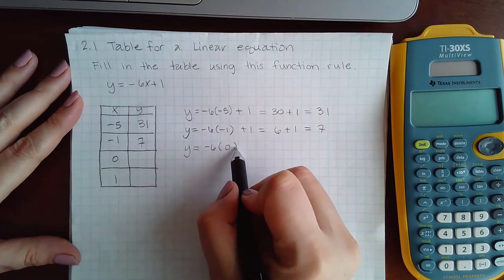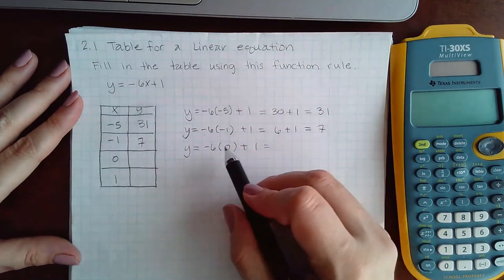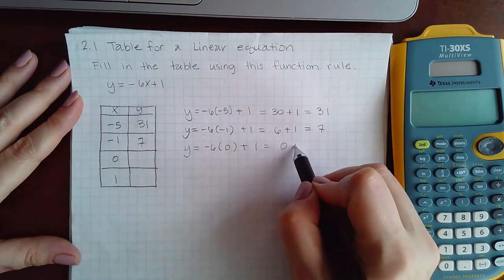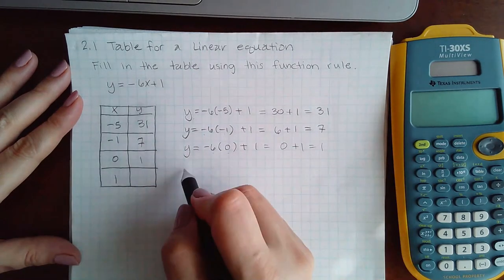For the next y value, I'm going to be plugging in 0 for x. Negative 6 times 0 is 0, plus 1 is 1.